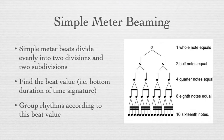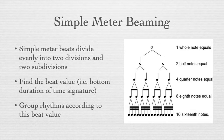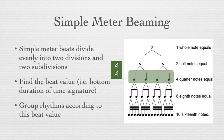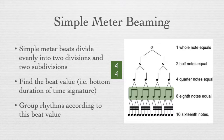In simple meter, the beat divides evenly into two divisions and again into two subdivisions, and so on. Once you've found your beat value — say in 4/4 — you'll have four quarter note beats. These beats will divide into two beamed-together eighth notes and into a beamed group of sixteenth notes and so on down the rhythm tree.